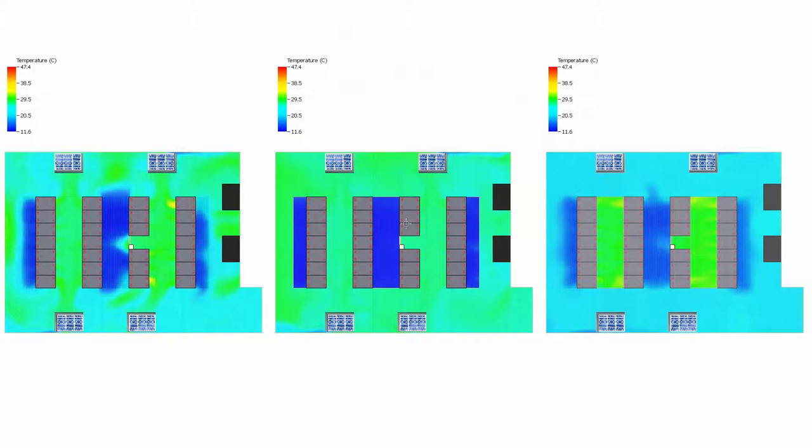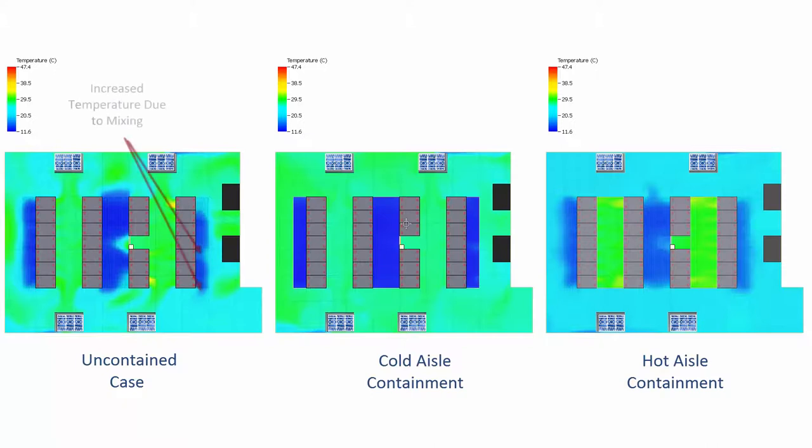Looking at the temperature variation within the room at a height of 1 meter off the floor, we see that within the uncontained system, mixing increases the air inlet temperature of some of the equipment, especially at the end of the aisles. The cold aisle contained system maintains a constant low temperature at the equipment's inlets. As a result, the cooling systems can be set to a higher temperature and still supply the equipment with air at safe operating temperatures. This saves energy and improves overall efficiency.